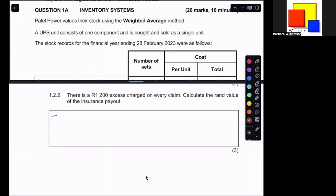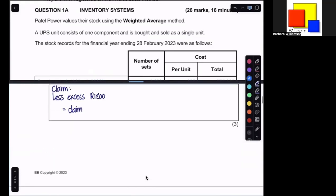There is a 1,200 rand excess charged on every claim, and excess simply means that's the first part payable by you. So what that means in effect is that you would take your total claim, and you would need to subtract the excess to find out how much the actual payout will be. So you would work out your claim, however you'll do that, and then you'll need to say less the excess, which is 1,200, and that will then give you your payout.